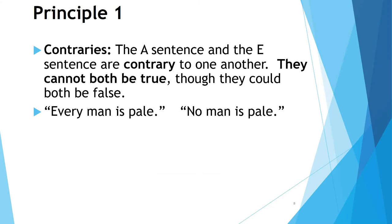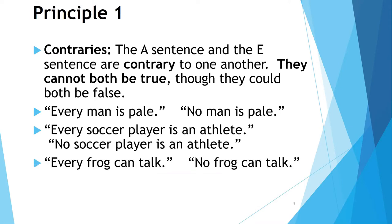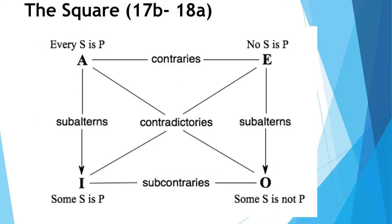To complete the possibilities: if 'every frog can talk' (the A sentence) is false, then 'no frog can talk' (the E sentence) is true — apologies to Kermit. So across the top, the contraries: if the A sentence is true, the E sentence has to be false; if the E sentence is true, the A sentence has to be false. They cannot both be true, but they could both be false. The second principle is contradiction — the relationship in the diagonals. The A and O sentences are contradictory, and the E and I sentences are contradictory: if one is false, the other has to be true, and vice versa. For example, 'every shark is aquatic' is true, so 'some shark is not aquatic' must be false.